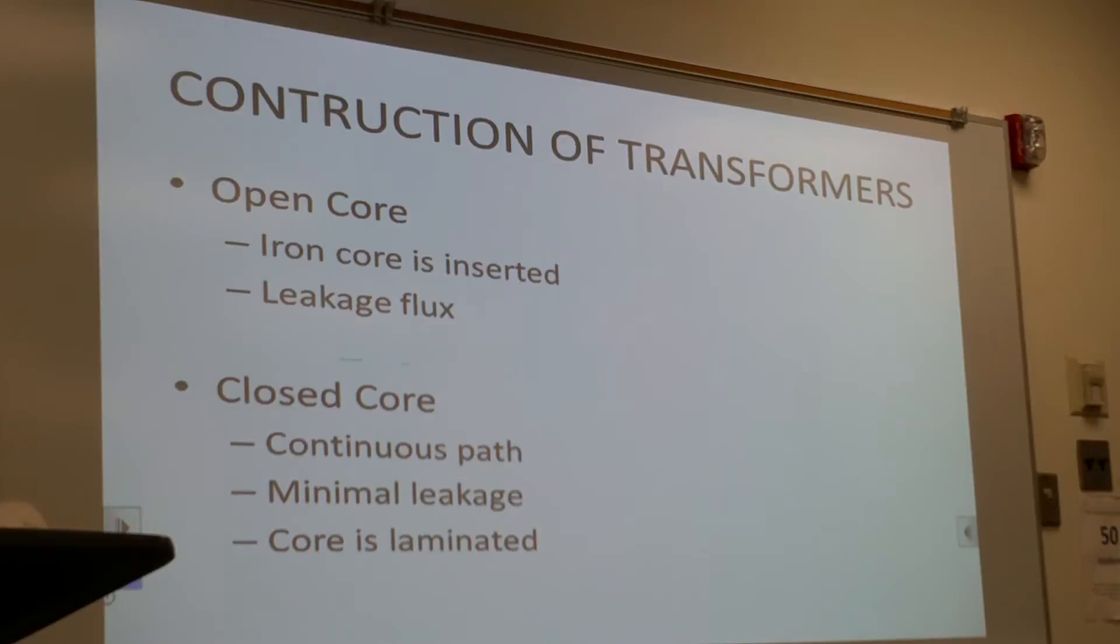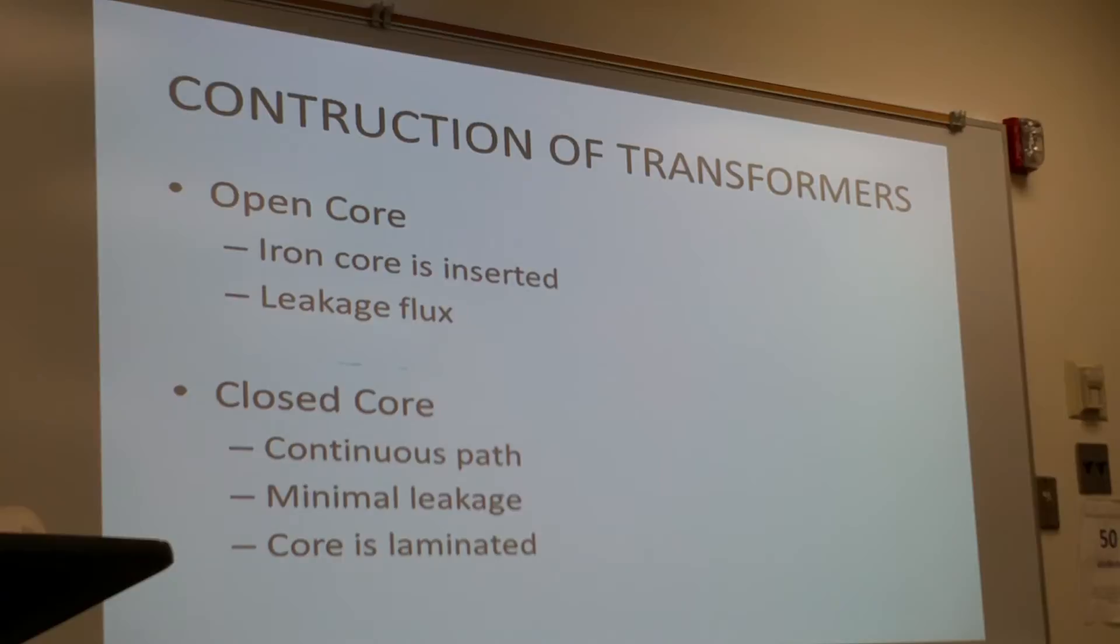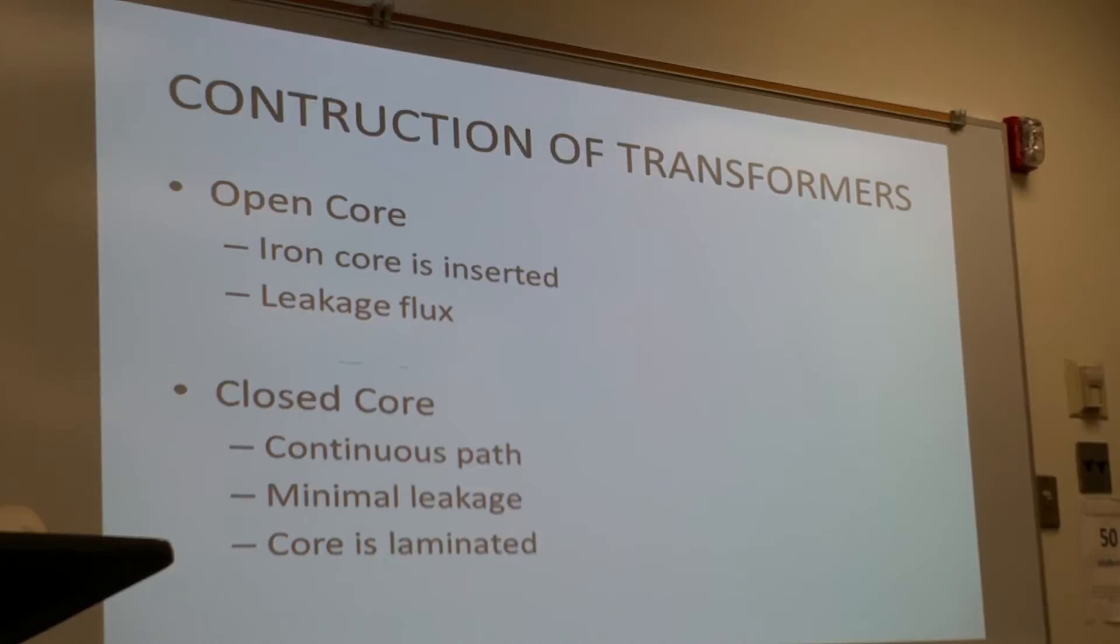I'm going to start from the least efficient to the most efficient. The most simplest type of transformer is an open core. I mean there's another one called the air core, but they don't mean that one. So an open core is the simplest type of transformer constructed. It is designed with each side having a coil.